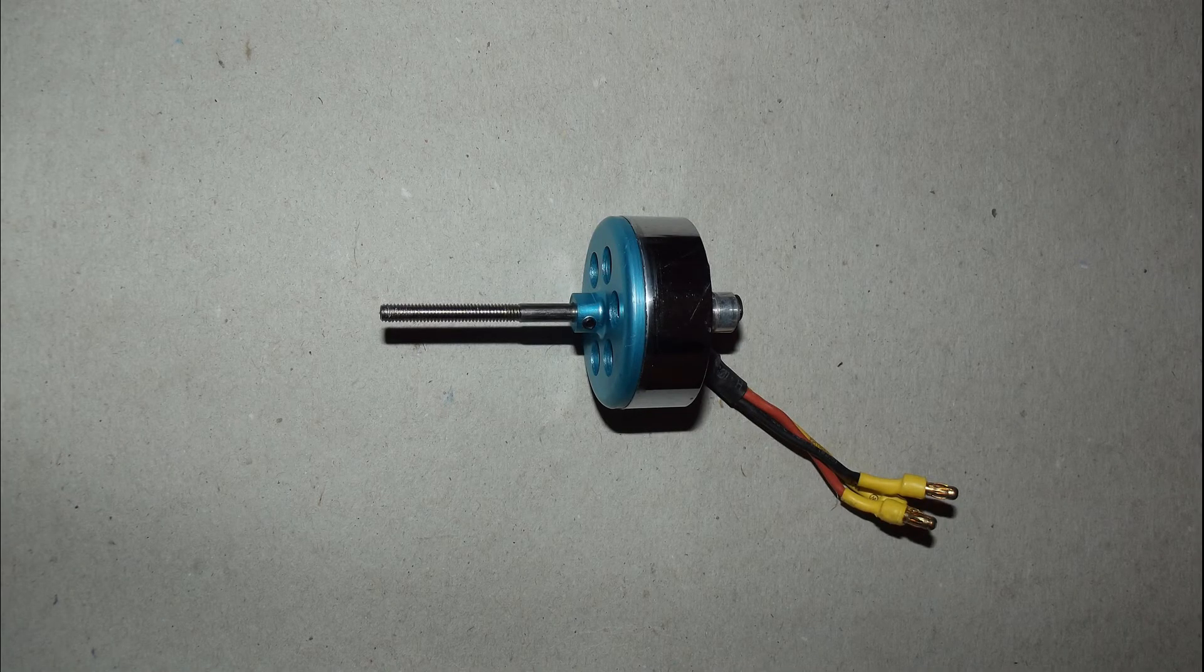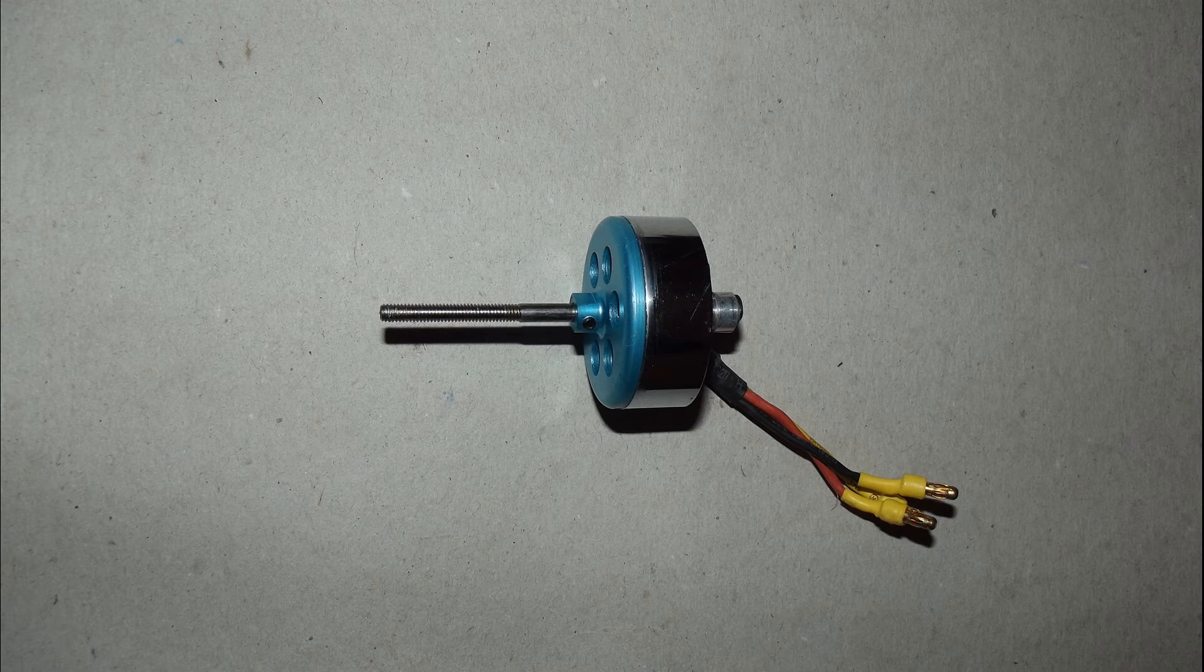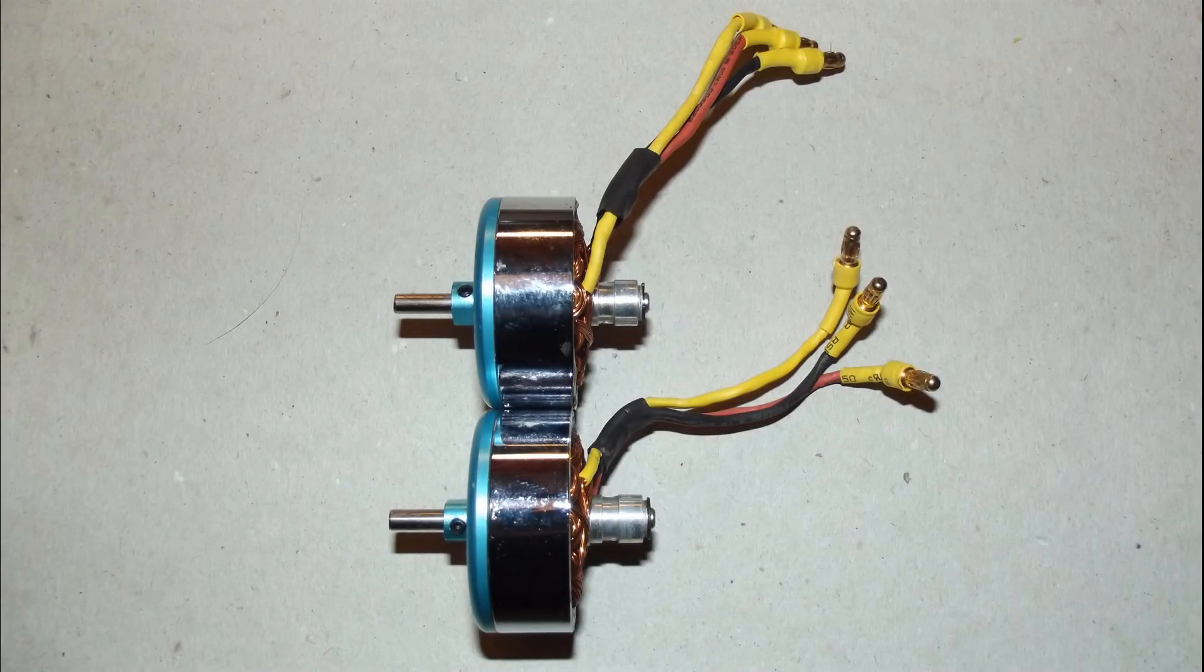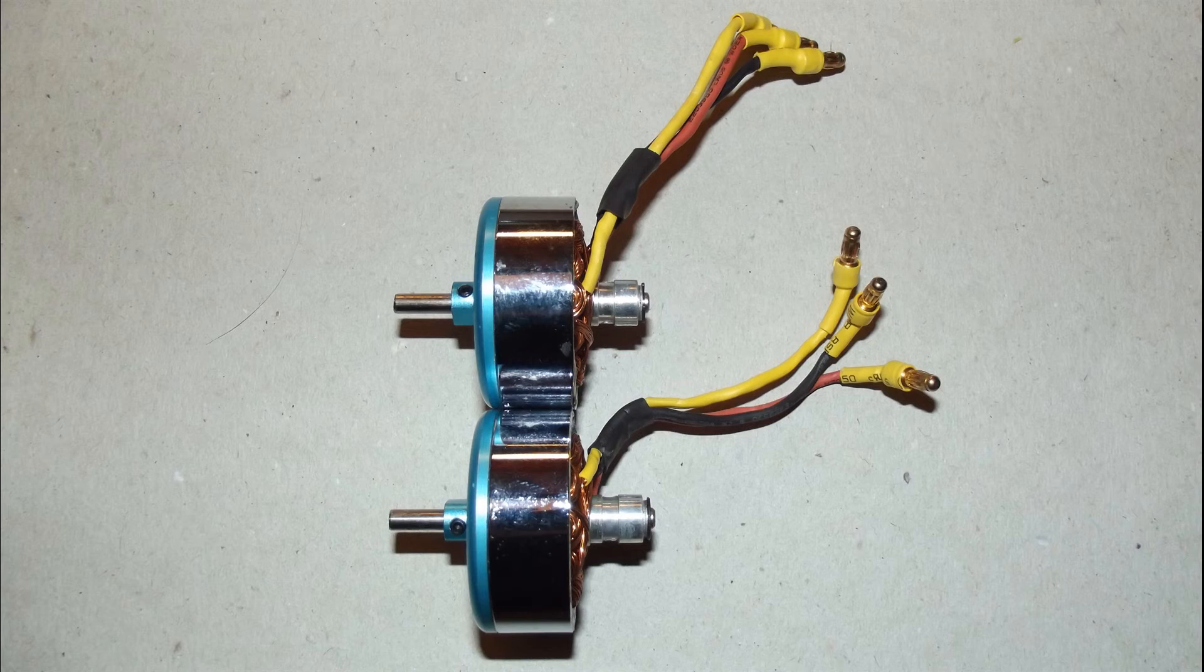Take your standard motor, clamp the threaded part in a vise and saw off right at the smooth shouldered part at the end of the thread. It should now look like this. Dress the end of the new shaft with a modelling file to remove any burrs.